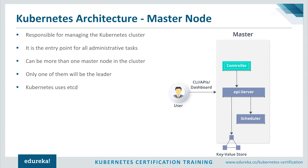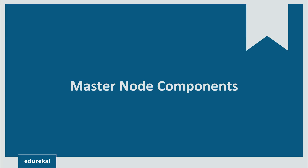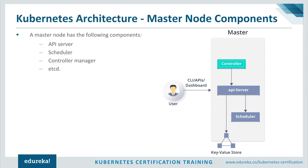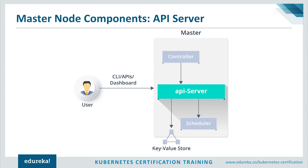The key-value store can be part of the master node or it can also be configured externally, in which case master nodes connect to it. A master node has mainly four components: the API server, the scheduler, the controller manager, and etcd. Starting with the API server — all administrative tasks are performed via the API server within the master node. A user sends REST commands to the API server, which then validates and processes the request. After executing the request, the resulting state of the cluster is stored in the distributed key-value store.